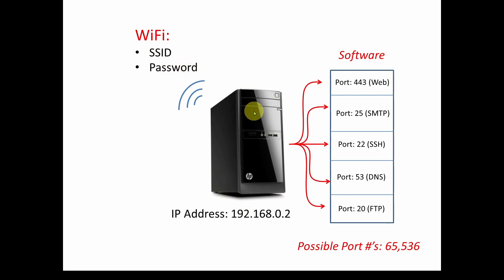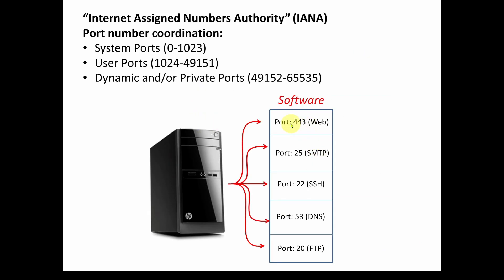Regarding ports, there are about 65,536 possible port numbers. There is an organization called the Internet Assigned Numbers Authority, or IANA, that coordinates a lot of these numbering systems on the internet. Regarding ports, there are different categories. System ports are generally from 0 to 1,023 — we probably want to stay outside that range. User ports run from 1,024 to 49,151 — that's the range we'd likely look into for our software. There are also dynamic or private ports from 49,152 to 65,535.